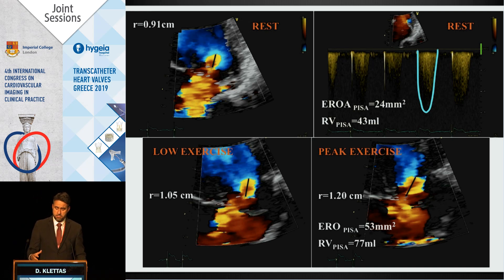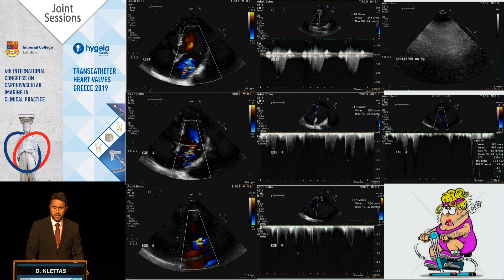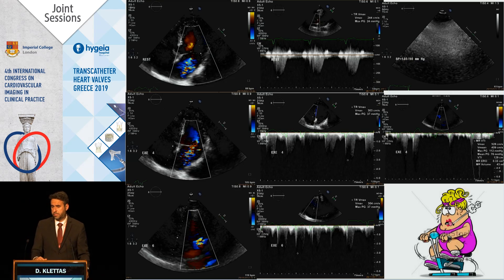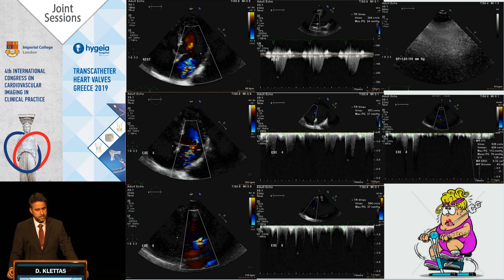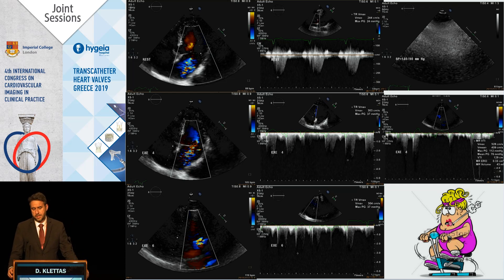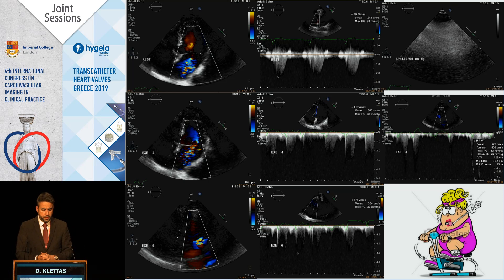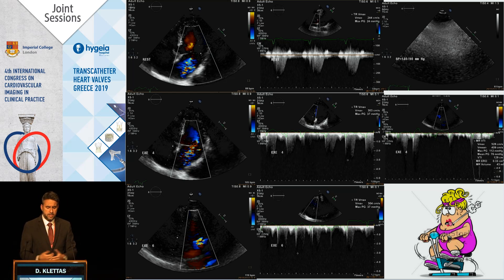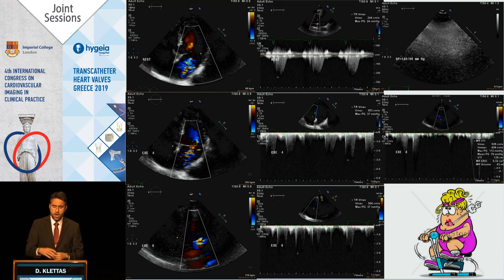Can we say that MR always increases throughout exercise? No. The result of an exercise test in organic MR is really unpredictable. In our lab at the First Department of Cardiology, this is a case where MR decreases throughout the test, and the pulmonary pressures almost remain the same throughout the test.